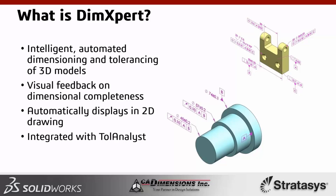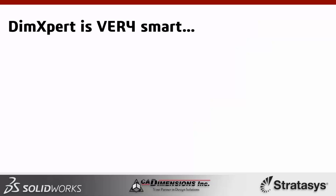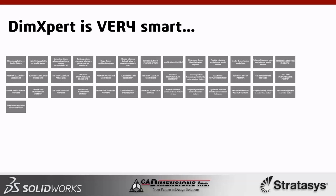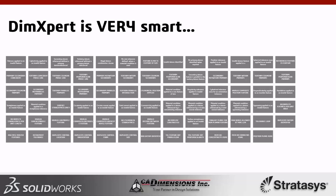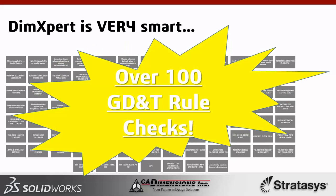DimExpert has over 100 rule checks — rules that don't exist on our 2D drawings. On a 2D drawing you can throw any dimension anywhere, double-dimension, add GD&T with no intelligence. But DimExpert looks at the rules and says, 'Why is this tolerance frame referencing a datum you haven't defined yet?' It's very smart. DimExpert is built on the ability to recognize machining features — how a part is going to be manufactured: planes, cylinders, holes, countersinks, counterbores, cones, notches, pockets, and surfaces.